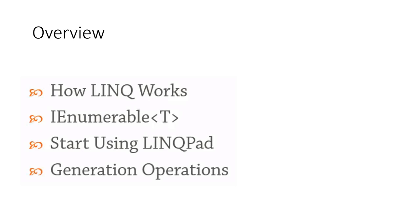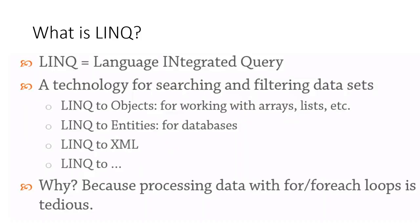We're going to talk about how LINQ works. There's a very important interface named IEnumerable that all of the LINQ objects implement. LINQ stands for Language Integrated Query — it's a technology for searching and filtering data sets. Going back to your Haskell instruction, this is actually what C-sharp has added that is very much functional. C-sharp has adopted a lot of these functional ideas, and LINQ is a very strong component of that.